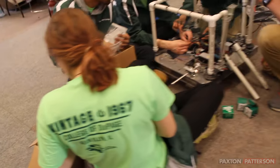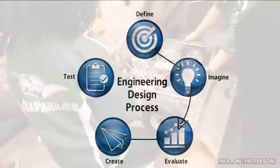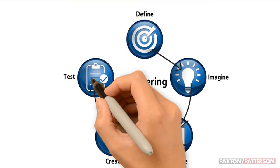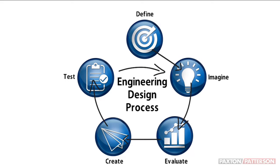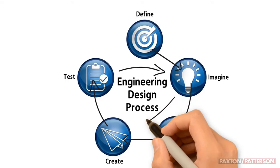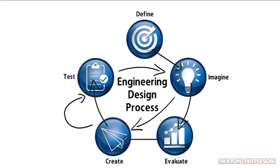It's important to note that designers typically develop multiple versions of a design before calling it final, and the Engineering Design Process is not always linear. It is common to jump from stage to stage and revisit stages several times before moving on. The longer the design process goes on, the more problems will be discovered and improvements made.